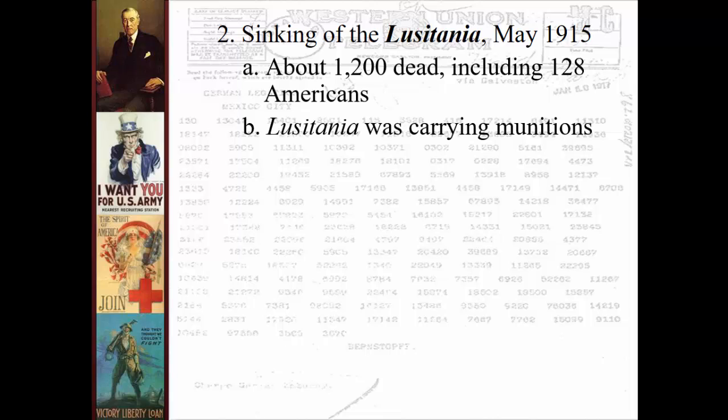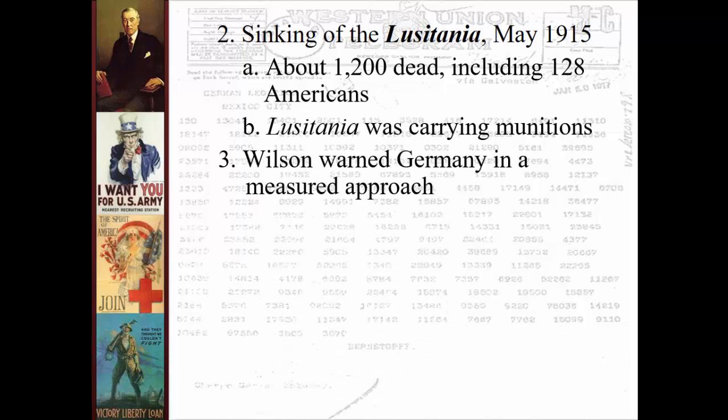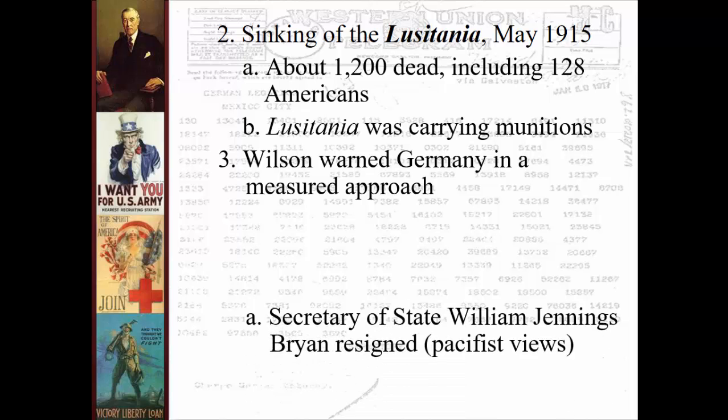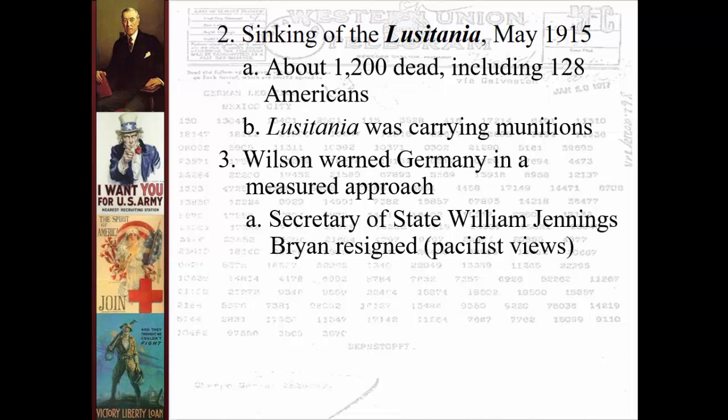In May of 1915, the Lusitania — a passenger ship, essentially a cruise ship — was sunk by a German U-boat. 1,200 people were killed, including 128 Americans. This was a massive loss of life. It's not quite clear why a cruise ship was sailing in the middle of a war zone, but the reality was they were, in fact, carrying some small arms ammunition, which was one of the reasons Germany justified the attack. Since so many Americans had been killed, Wilson warned Germany. However, you almost have to ask: what were these Americans thinking, traveling aboard a British ship in a war zone on a pleasure cruise?